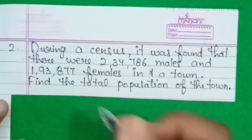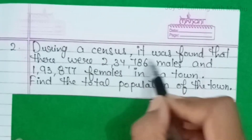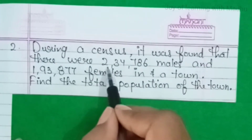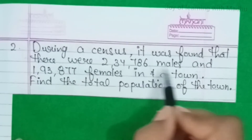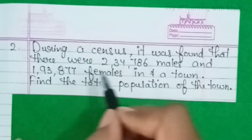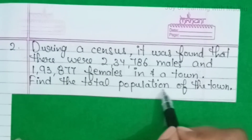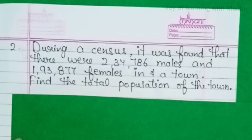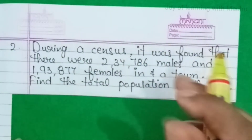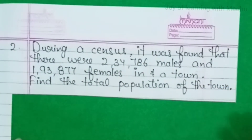Now students, let's do the second question. During a census, it was found that there were 2,34,786 males and 1,93,877 females in a town. Find the total population of the town. Census होता है जब population count की जाती है — total data जो मिलता है वो census होता है।